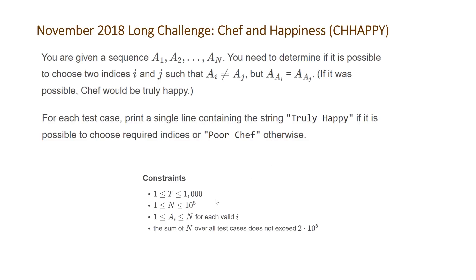The constraints for this problem are that t, the number of test cases, will be between 1 and 1,000 and the number of numbers in our array will be between 1 and 10 to the 5 and the values of our elements in our array will be between 1 and n. The sum of n over all the test cases won't exceed 2 times 10 to the 5th.